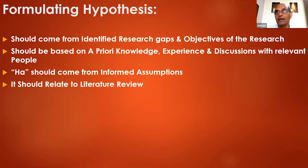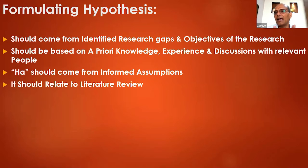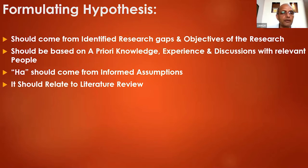Most importantly, relate your H-alternate to your literature review — it should be related. Any hypothesis you develop should relate. You must say: my H-alternate one comes from XYZ literature, two comes from XYZ literature, three comes from a priori knowledge. Hypotheses don't spring up from anywhere; they must come from specific places — either from literature review or your own a priori knowledge.